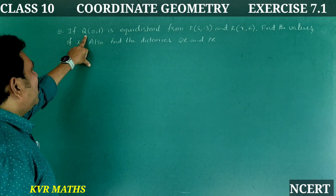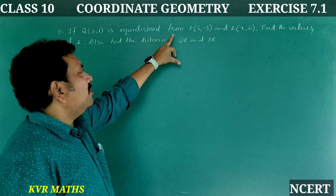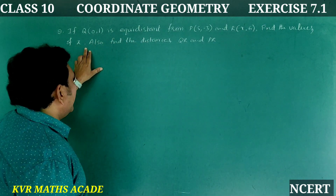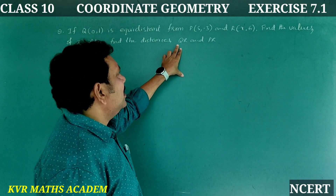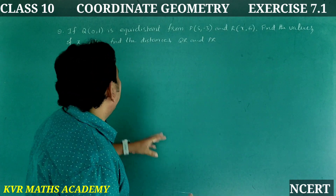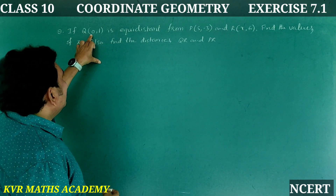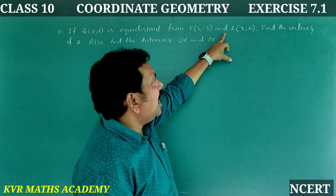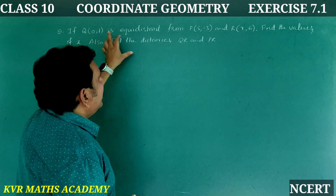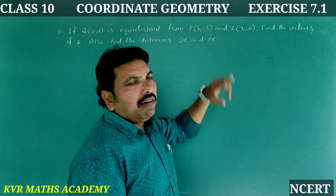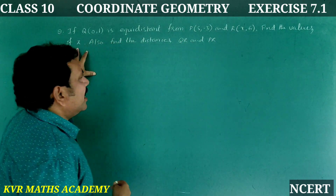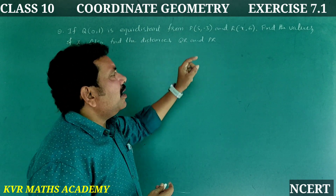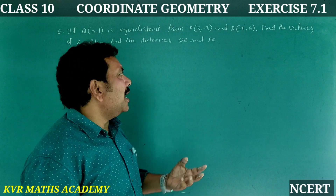Ninth question: If Q(0,1) is equidistant from P(5,-3) and R(x,6), find the values of x. Also find the distances QR and PR. That means this point Q is at equal distance from P and R. Find the values of x, and find the distances QR and PR.